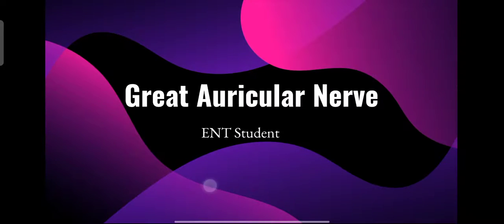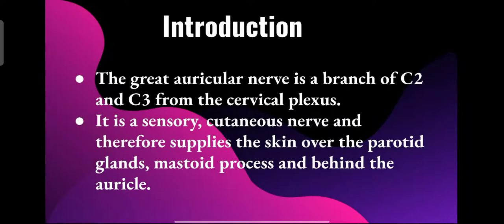The great auricular nerve is a branch of C2 and C3 nerves from the cervical plexus. It is a sensory cutaneous nerve and it supplies the skin over the parotid glands, mastoid process, and behind the auricle.